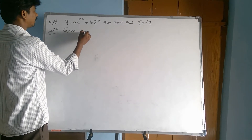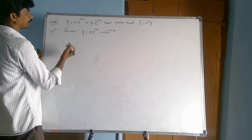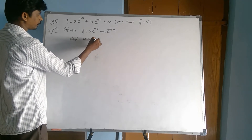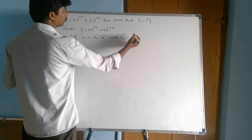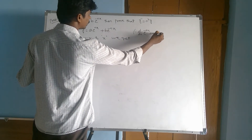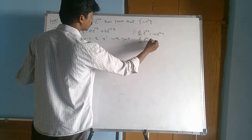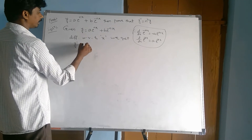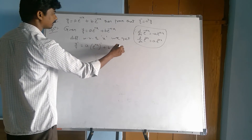Given y equal a into e power nx plus b into e power minus nx. Differentiating with respect to x. We know that d by dx of e power minus ax equals minus a into e power minus ax, and d by dx of e power ax equals a into e power ax. Using these two formulas here we are applying.